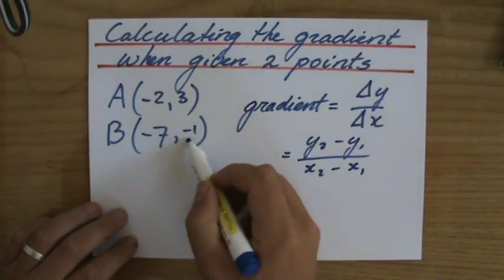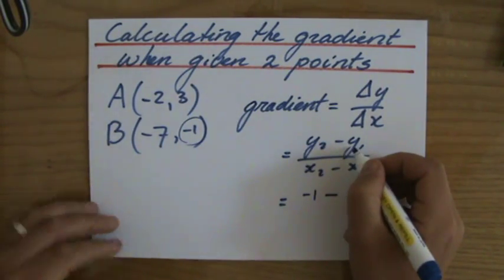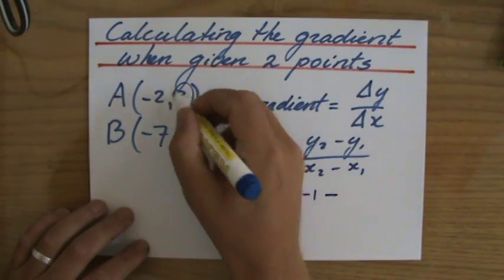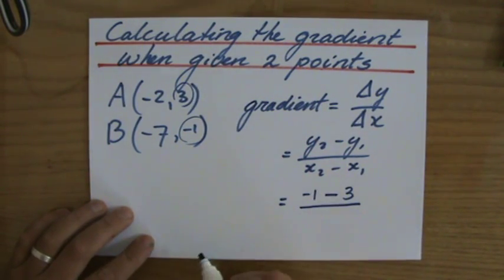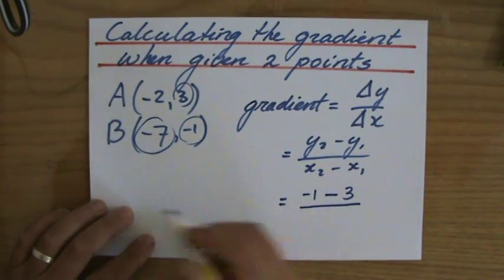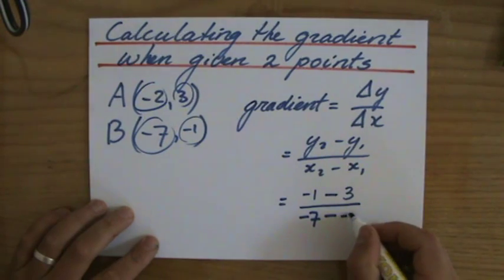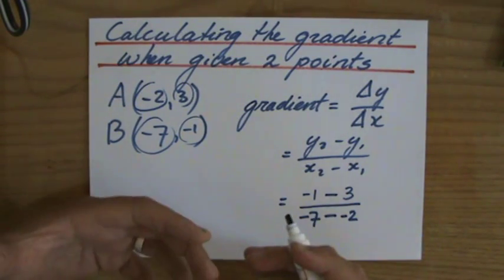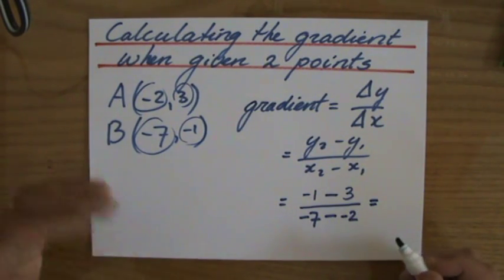Now, what is the y coordinate of point B minus 1 minus the y coordinate of A, that's 3. And that all divided by the x coordinate of B minus 7 minus the x coordinate of A minus 2. So make sure you are very consistent with those signs and take care in your work. There's no reason to rush.